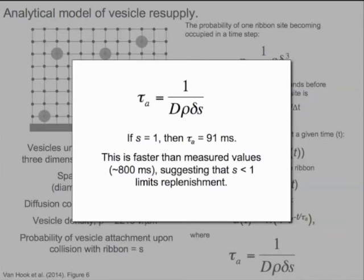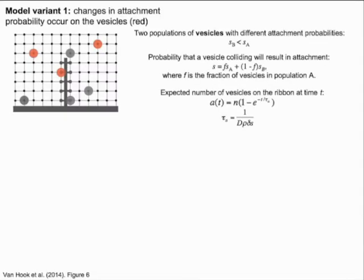We next develop two variations of this model to explore whether calcium and calmodulin ultimately act on the ribbon or act on vesicles to quicken the replenishment process. In the first variant of the model, we assume that changes in attachment probability are the result of modifications to vesicles themselves. This assumes that there are two populations of vesicles. Those in population A have a higher attachment probability, while those in B have a lower attachment probability.